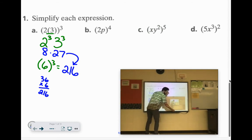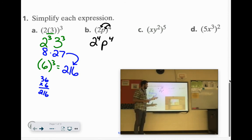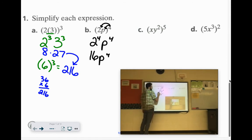So on B, we have 2p all raised to the 4th power, so you've got to give it the 4 to the 2, because it was 2 to the 1st, so 1 times 4 is 4. If it was p to the 1st, now it's going to be p to the 4th. And 2 times 2 is 4, times 2 is 8, times 2 is 16, p to the 4th.